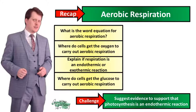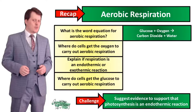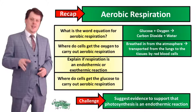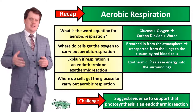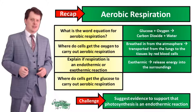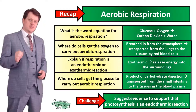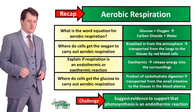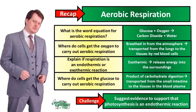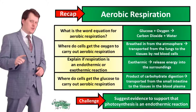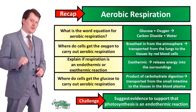The word equation for aerobic respiration is glucose plus oxygen gives you carbon dioxide and water. Oxygen is breathed in from the atmosphere and transported from the lungs to the tissues in the red blood cells. Respiration is an exothermic reaction because it releases energy to its surroundings. Glucose is the product of carbohydrate digestion and is transported from the small intestine to the tissues in the blood plasma. Evidence that photosynthesis is endothermic: endothermic reactions absorb energy from their surroundings — photosynthesis requires light energy, and if you put a plant in a dark room it will eventually wilt because it cannot photosynthesize.